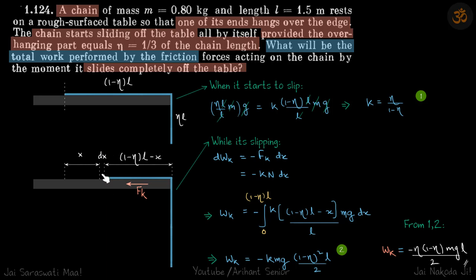Why are we integrating it? Because the fk is changing with time. The normal reaction, as it is less and less, also reduces, so it's not a constant. We are going to integrate it to get it for a small displacement and then integrate it from 0 to total length while it's slipping.